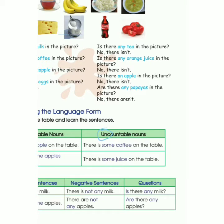Tapi kalau kamu bilang 'There is one coffee' — tidak bisa. Kopi itu tidak bisa dihitung. Kecuali kita ubah ke dalam bentuk satuan gelas. Kemudian di sini: There is some juice on the table — sama contohnya dengan coffee. Juice itu tidak bisa dihitung, makanya harus menggunakan 'There is some juice'.